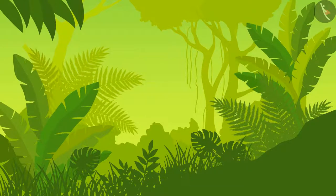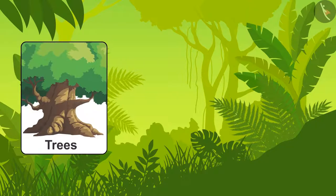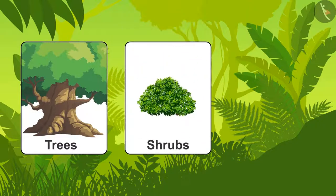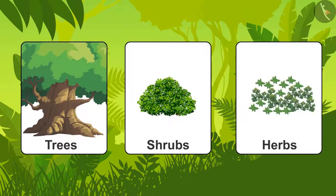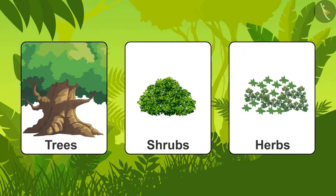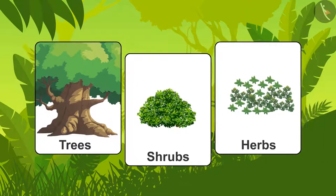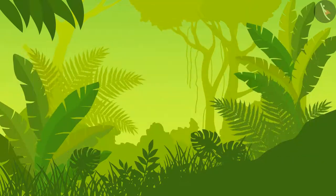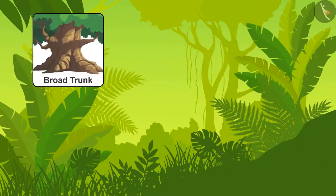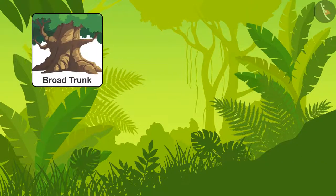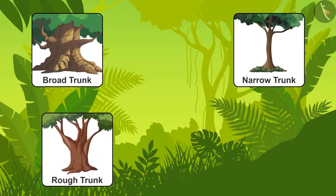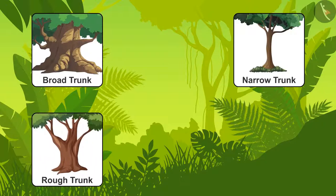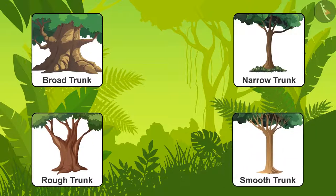So did you see? So many different plants! Trees are plants which are large and which have a trunk. Smaller than trees are shrubs. Smaller than shrubs are herbs. Now, let's focus on trees. Some tree trunks are broad, some are narrow. Some tree trunks have a rough surface, and some are smooth.